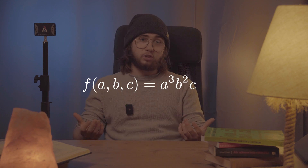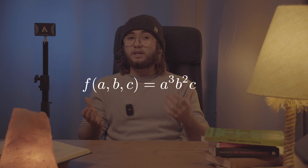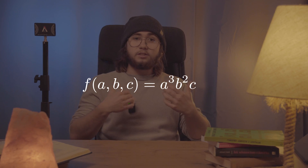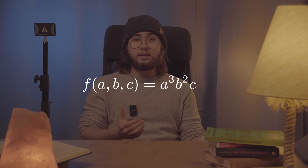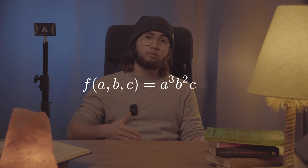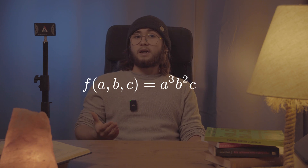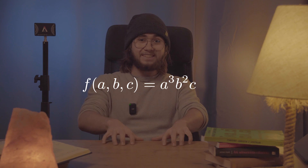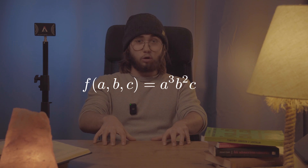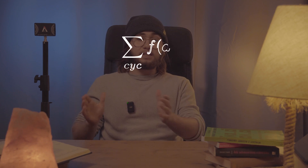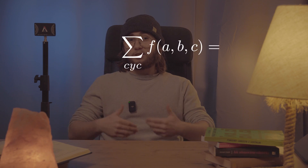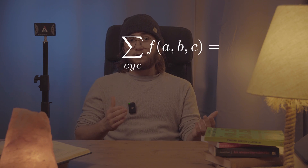So how does this even work? Let's say we have a function — let's call it f — where f takes in a, b, and c as its input variables, and f(a, b, c) equals a cubed multiplied by b squared multiplied by c. We see that the order we put those variables into the function matters quite a lot here.